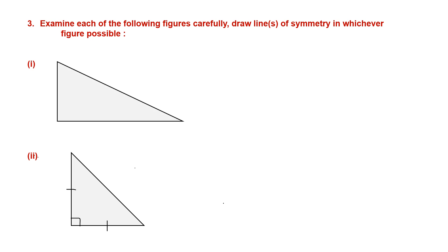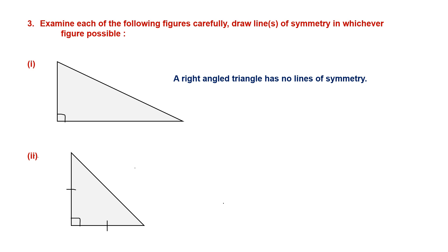Question 3: examine each of the following figures carefully and draw lines of symmetry wherever possible. The first figure is a right-angled triangle. A right-angled triangle generally has no lines of symmetry, unless it is an isosceles right-angled triangle.